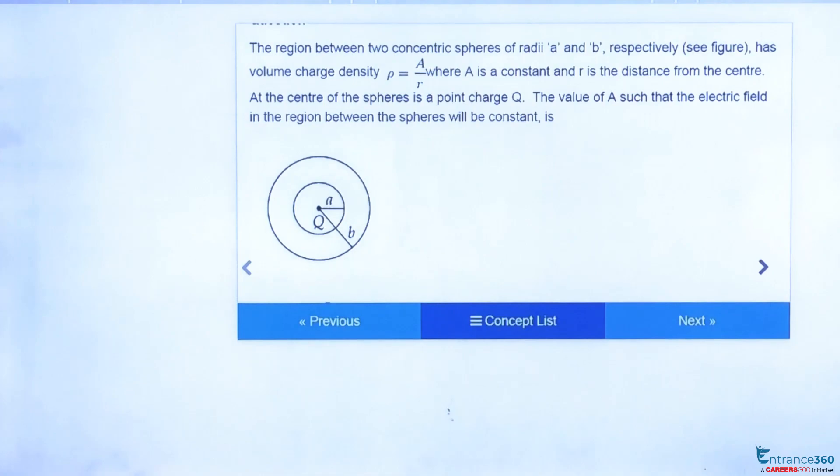Question says that we have two concentric spheres of radius A and B whose volume charge density is given as A by R. Now we have to find the value of A such that the electric field in between these spheres is constant.